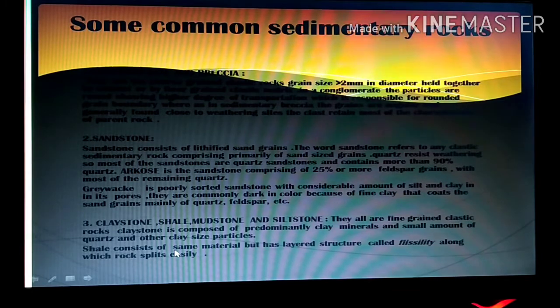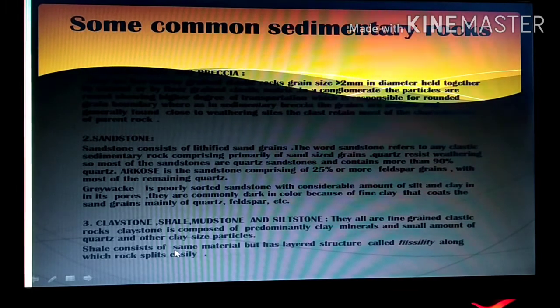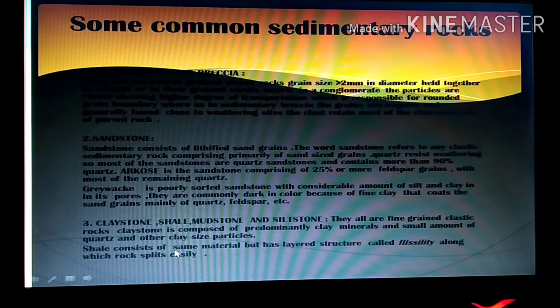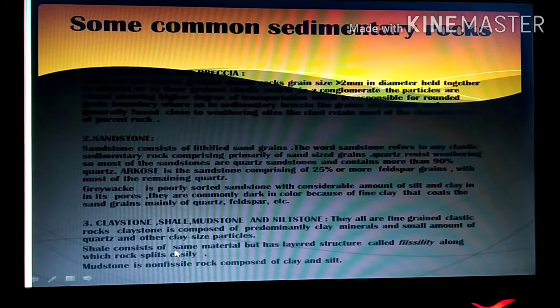Shale consists of same material but has layered structures which is a very characteristic feature of shale. That is fissility along which the rock splits. And the mudstone is a non-fissile rock composed of clay and silt.